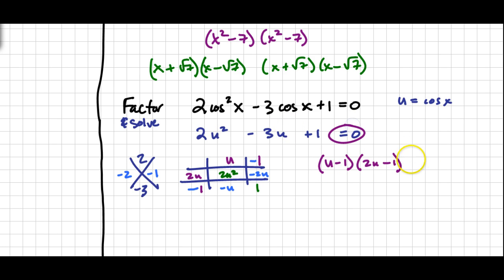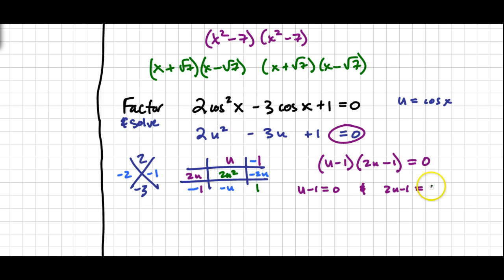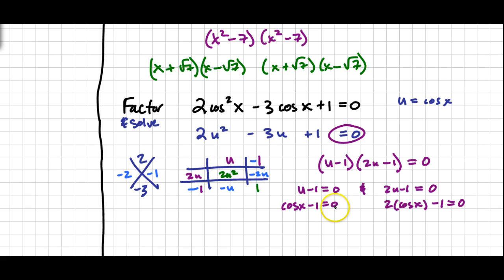Remember to set these equal to 0. If two numbers multiply to make 0, then one of them must be 0. Setting each factor equal to 0 separately and substituting cosine of x back in for u: cosine of x minus 1 equals 0, and 2 times cosine of x minus 1 equals 0. Solving: the first gives cosine of x equals 1. The second gives cosine of x equals one-half after adding 1 and dividing by 2.